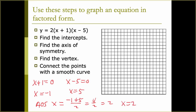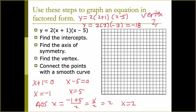We have our AOS and our two intercepts. The last thing we need to find is our vertex. We plug x equals 2 back into our factored form and solve for y: y equals 2 times (2 plus 1) times (2 minus 5), which is 2 times 3 times negative 3, which is negative 18. So our vertex is the point (2, negative 18).